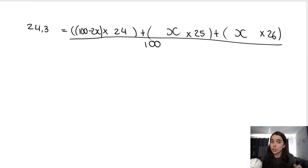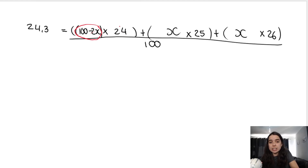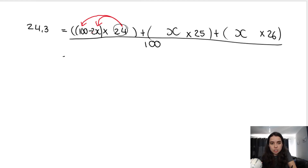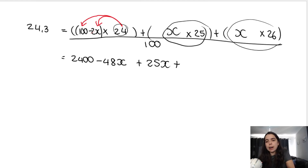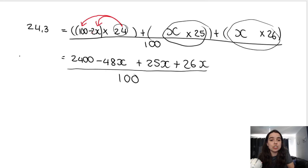The algebra is very similar to my previous video. I'm going to simplify the top of the fraction by distributing: 24 × 100 = 2400, and 24 × (−2x) = −48x. The second bracket simplifies to 25x, and the third bracket to 26x. All of that divided by 100 equals 24.3.